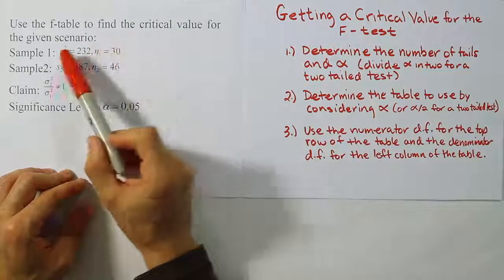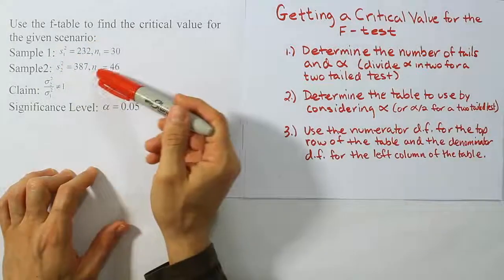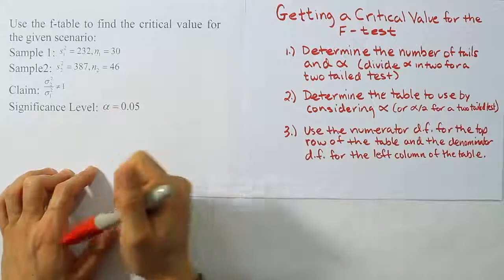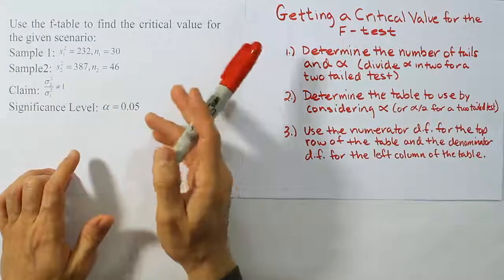Use the F-table to find the critical value for the given scenario. So we have some sample data, we have a hypothesis, and we have a significance level. So first thing, let's go through our steps again.